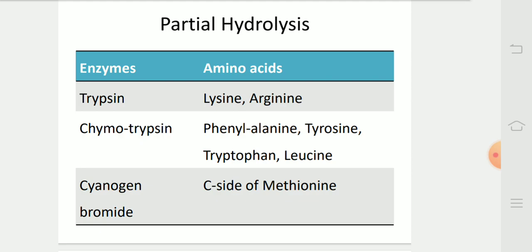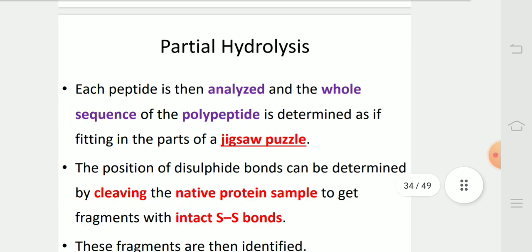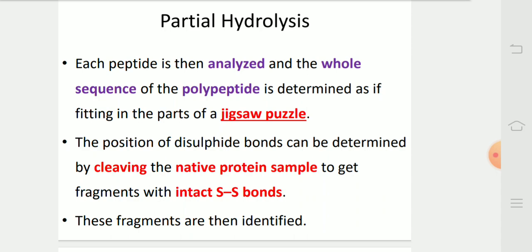Trypsin hydrolyzes the peptide bonds formed by alpha-carboxyl groups of lysine and arginine. Chymotrypsin preferentially acts on peptide bonds formed by carboxyl groups of amino acids phenylalanine, tyrosine, tryptophan, or leucine. Cyanogen bromide attacks the C-side of methionine residue and breaks the peptide bond. Each peptide is then analyzed and the whole sequence of the polypeptide is determined as if fitting in the parts of a jigsaw puzzle. The position of different disulfide bonds can be determined by leaving the native protein sample to get fragments with intact SS bonds. These fragments can then be identified.